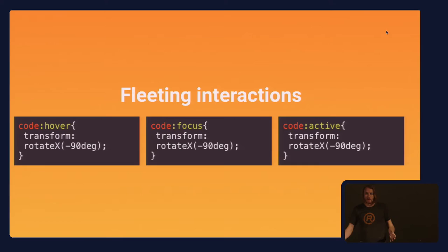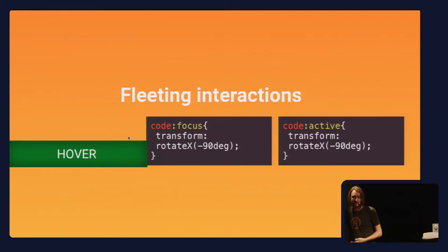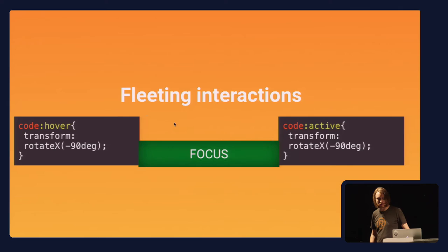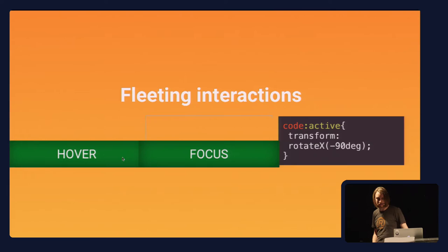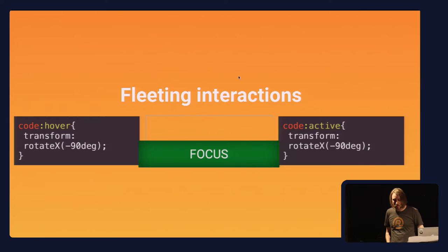I categorize these types of interactions into two types. The first I call fleeting interactions — your basic hover, focus, and active. The reason I call them fleeting is because the CSS statement is only true for as long as the action is true. Hover is only working for as long as your mouse is hovering over the element. Focus is only true for as long as that element is in focus, and active is only true for as long as the mouse is held down. You can combine focus and hover if you do focus first, but that's the only way you can combine these.